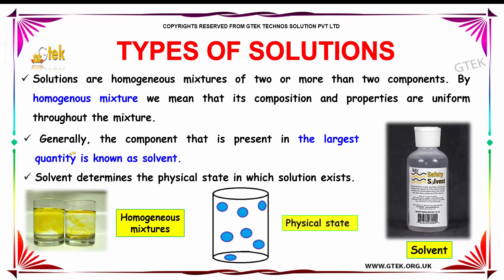Let's talk about the types of solutions. Solutions are homogeneous mixtures of two or more components. By homogeneous mixture we mean that its composition and properties are uniform throughout. The component present in the largest quantity is called the solvent, and the solvent determines the physical state in which the solution exists.